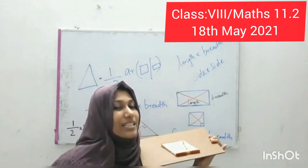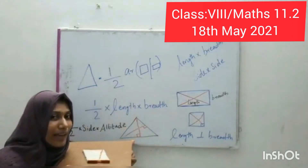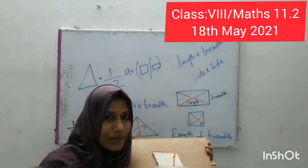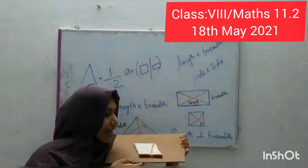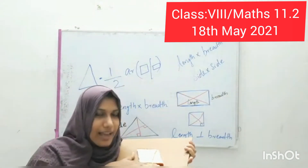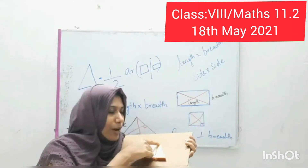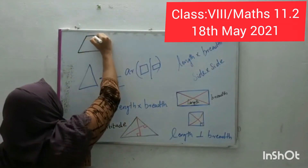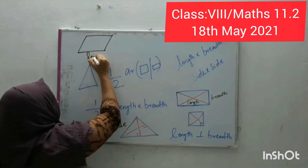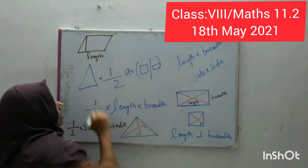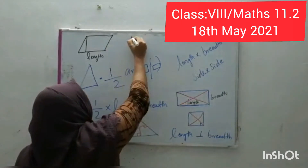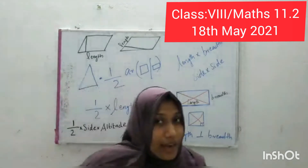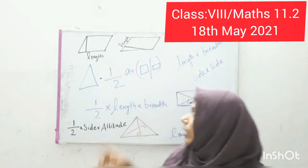Breadth is, as we did in the triangle, a perpendicular length. For this length, this is perpendicular. The equation is the same: length into breadth. Length is one side and breadth will be the perpendicular distance from the opposite corner. For a parallelogram like this, this is the length, and breadth will be the perpendicular.